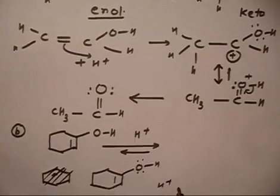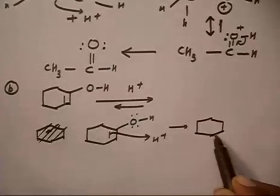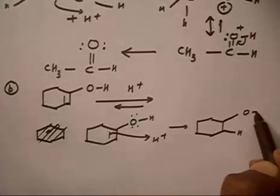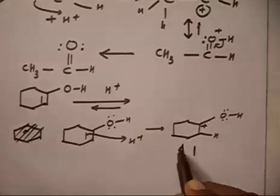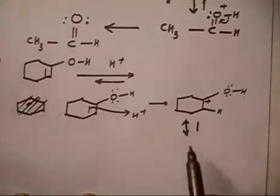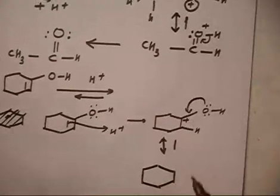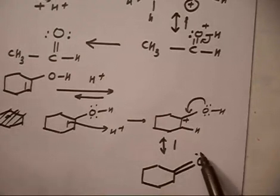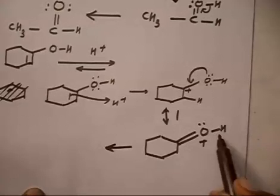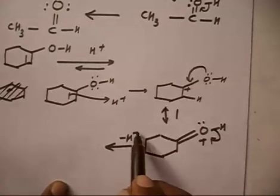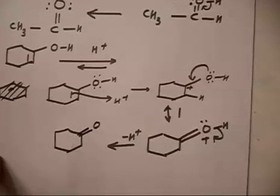With H+ added to the cyclic double bond, we form a carbocation with an OH group. This positive charge is resonance-stabilized, so we write a resonating structure with a plus charge on oxygen and a hydrogen. In the next step, loss of H+ gives cyclohexanone.